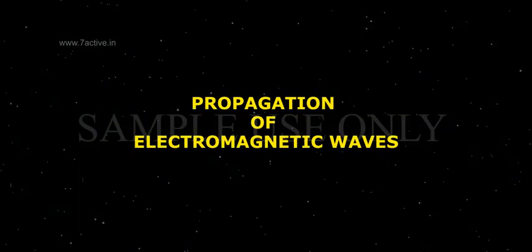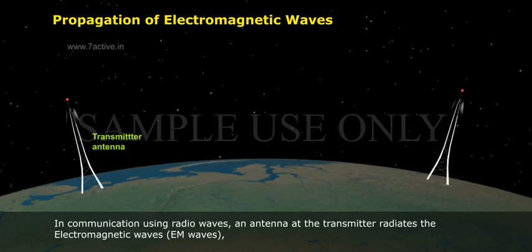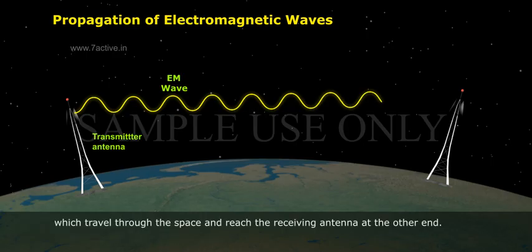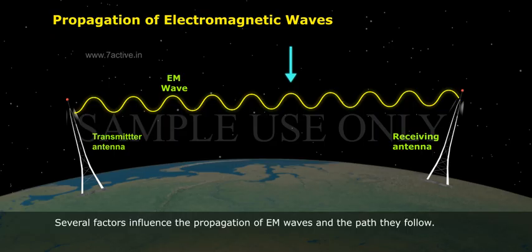Propagation of Electromagnetic Waves. In communication using radio waves, an antenna at the transmitter radiates the electromagnetic waves (EM waves), which travel through space and reach the receiving antenna at the other end. As the EM wave travels away from the transmitter, the strength of the wave keeps on decreasing. Several factors influence the propagation of EM waves and the path they follow.